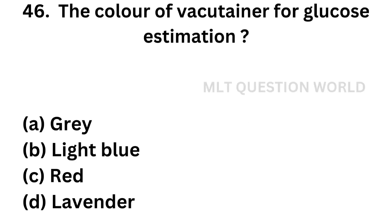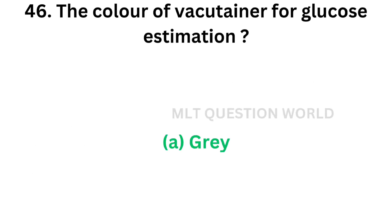Question number 46: What is the color of the vacutainer for glucose estimation? Option A: gray, option B: light blue, option C: red, option D: lavender. The correct answer is option A, gray. The gray vacutainer for glucose estimation contains sodium fluoride.